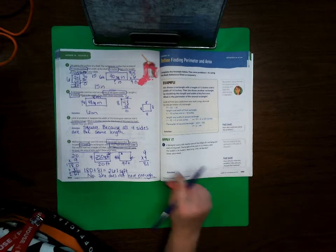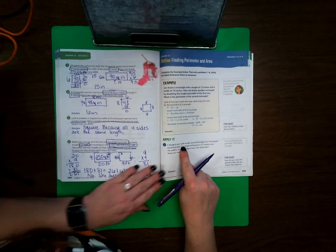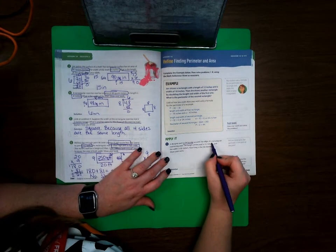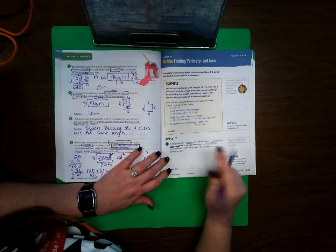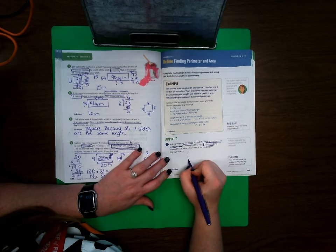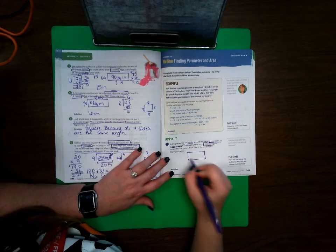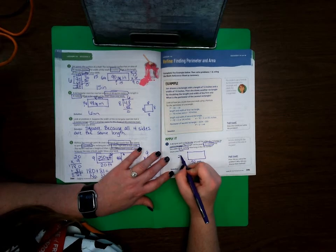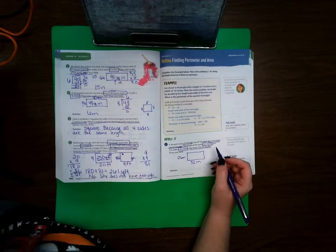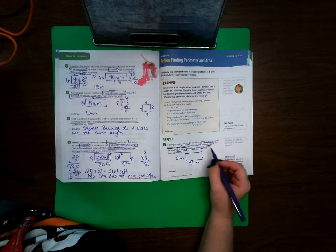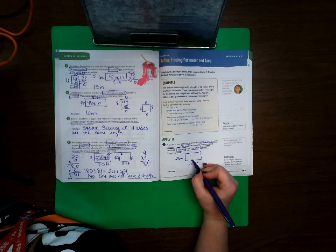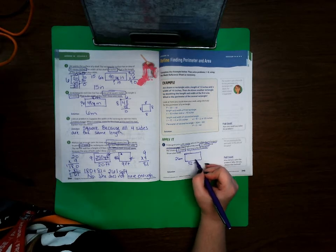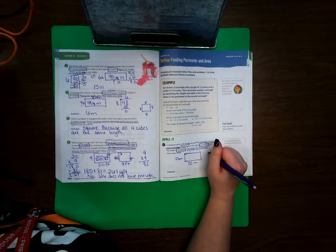On page 345, a designer puts a tile border around the edge of a rectangular swimming pool. The length of the pool is 52 meters, so I'm going to go ahead and draw my picture here, 52 meters, and the width is 26 meters. How long is the tile border? Well, if you think about a tile border, it's something that would go around the edge. A border is something that would go around the edge. If we are going around the edge of a shape, that is the perimeter.